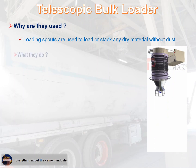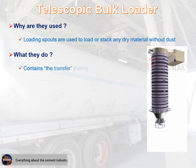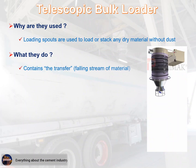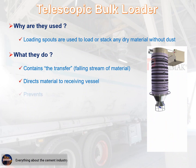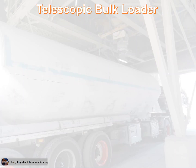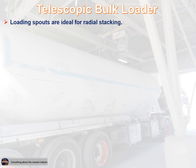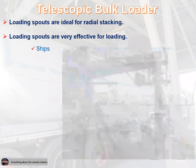Two: what they do — contains the transfer falling stream of material, directs material to receiving vessel, prevents dusting when used with negative air. Among its most important features of the telescopic bulk loader: loading spouts are ideal for radial stacking, and loading spouts are very effective for loading ships.